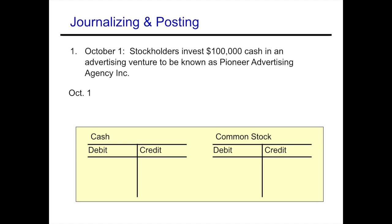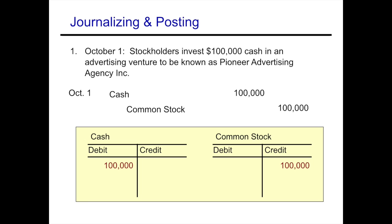On October 1st, stockholders invest $100,000 cash in advertising venture Pioneer Advertising Agency Inc. The company is receiving $100,000 in cash — cash is an asset going up, so we debit cash. The ownership claims on the assets are increasing, represented by common stock, which increases with a credit. Our journal entry is a debit to cash and a credit to common stock for $100,000. We then move that from the journal to the ledger.